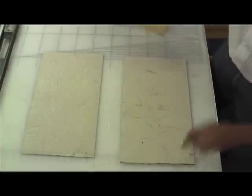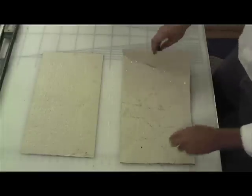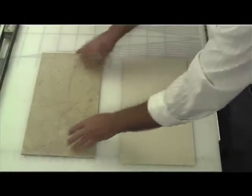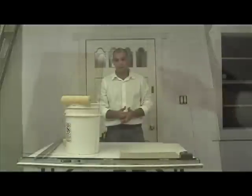After you're done gluing each piece, you'll put the pieces, you'll book the pieces together and allow them to sit for about five minutes or until the panels are soft enough to bend.